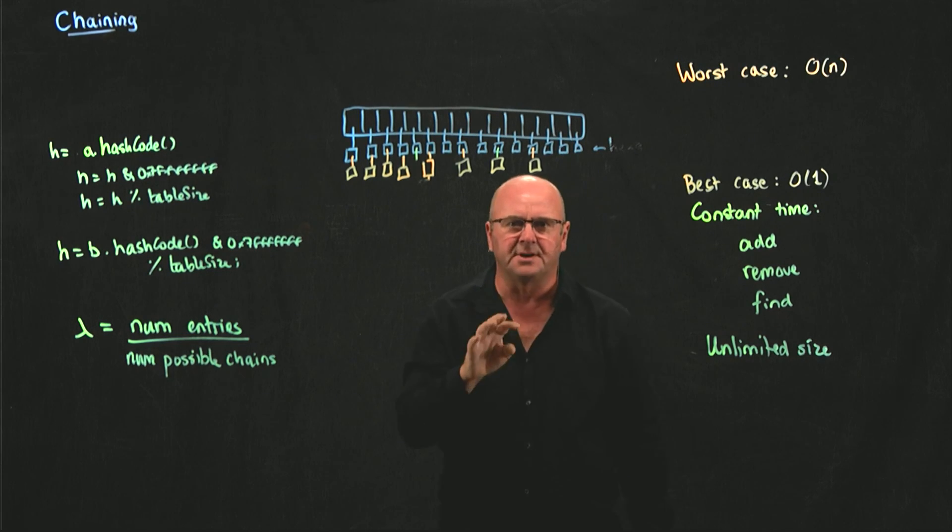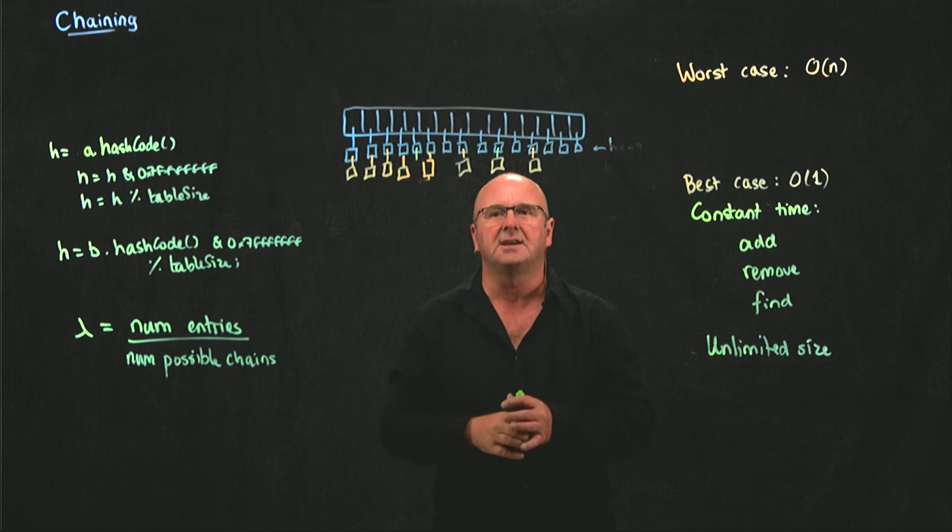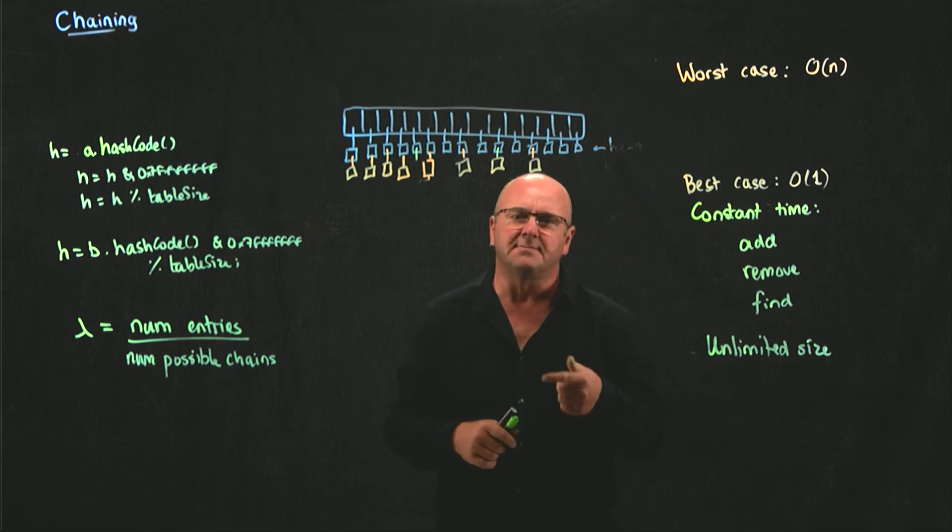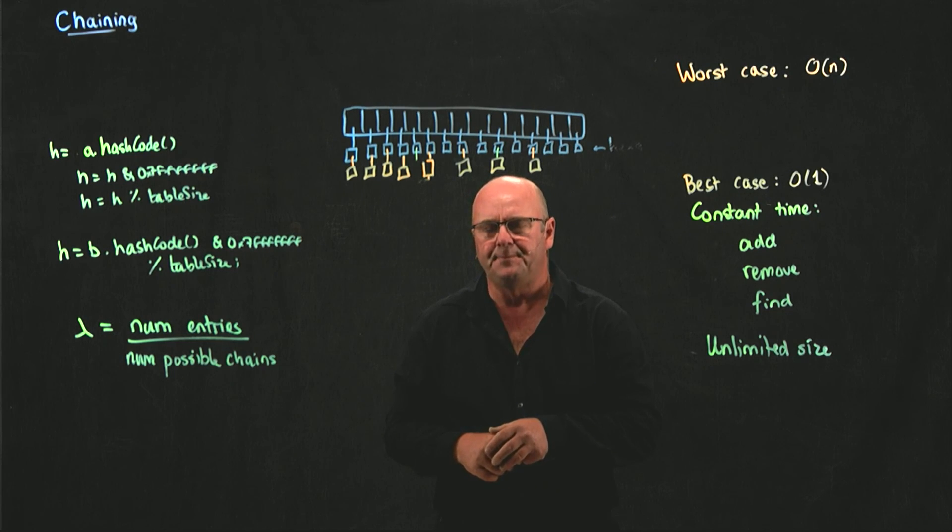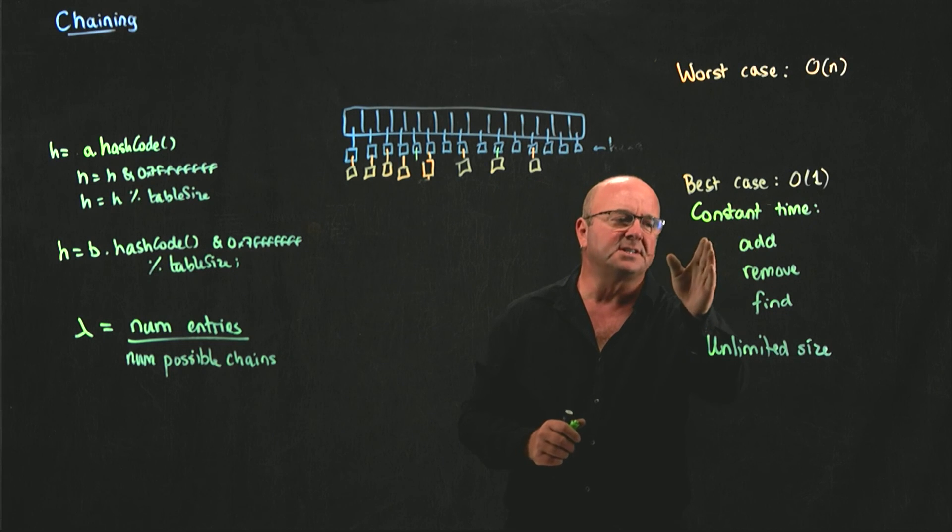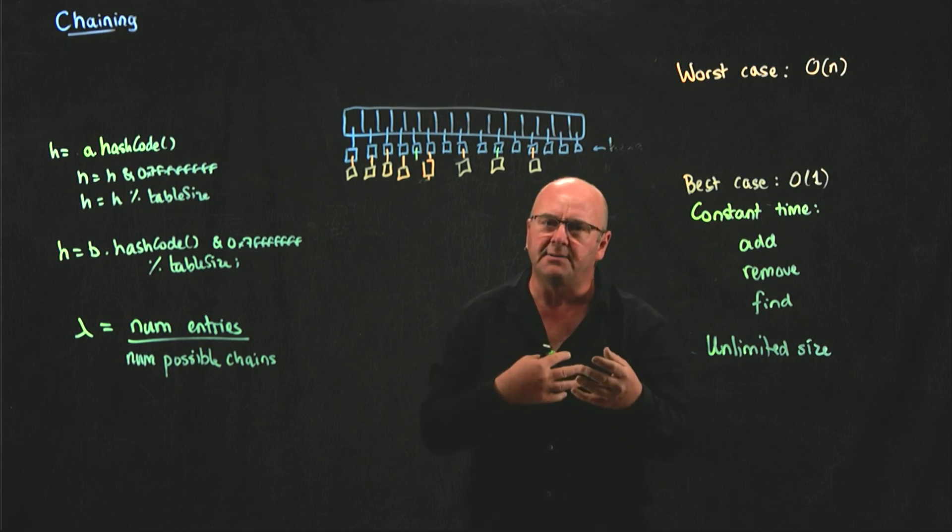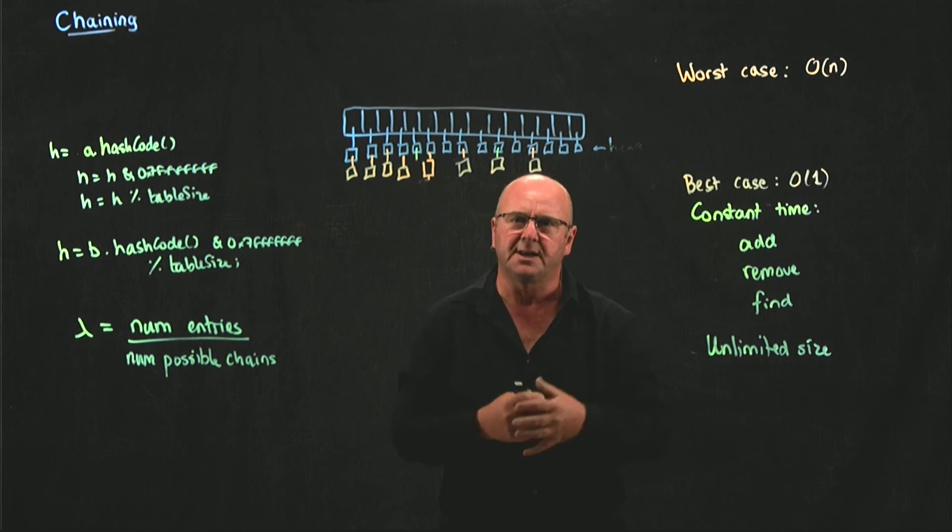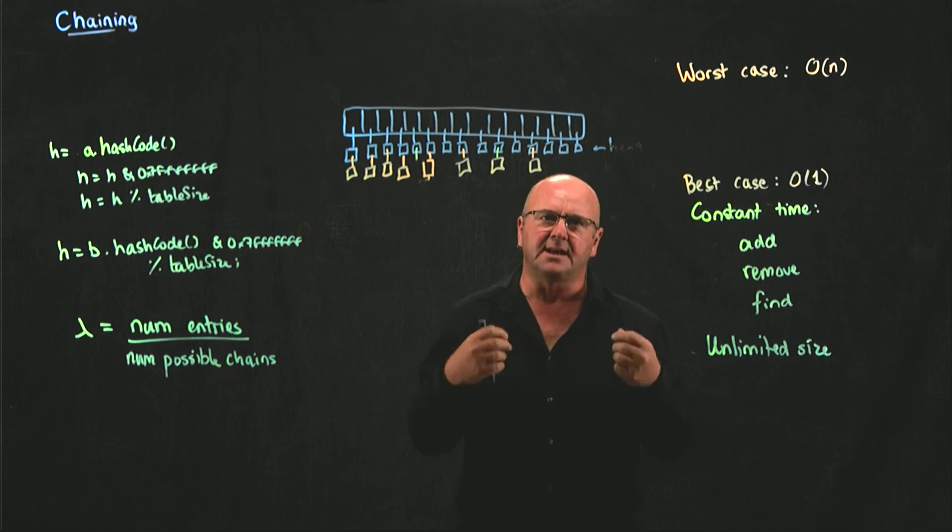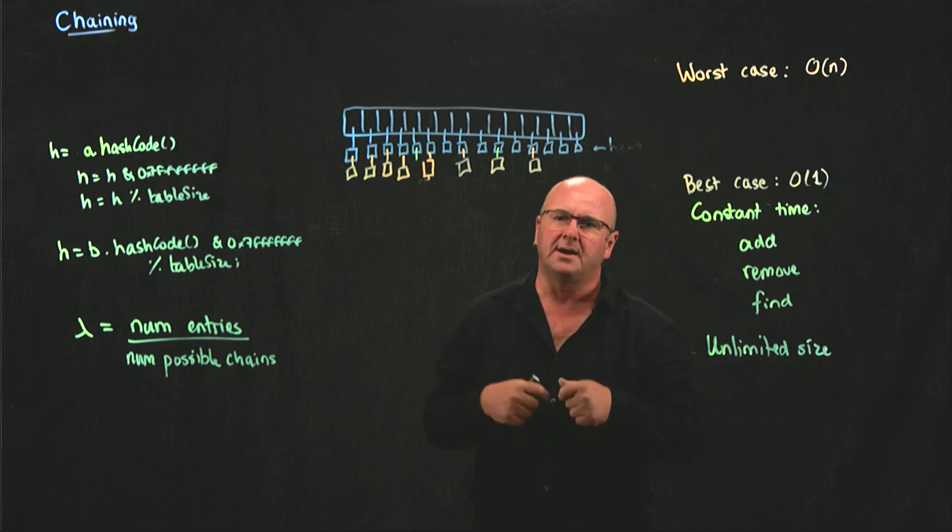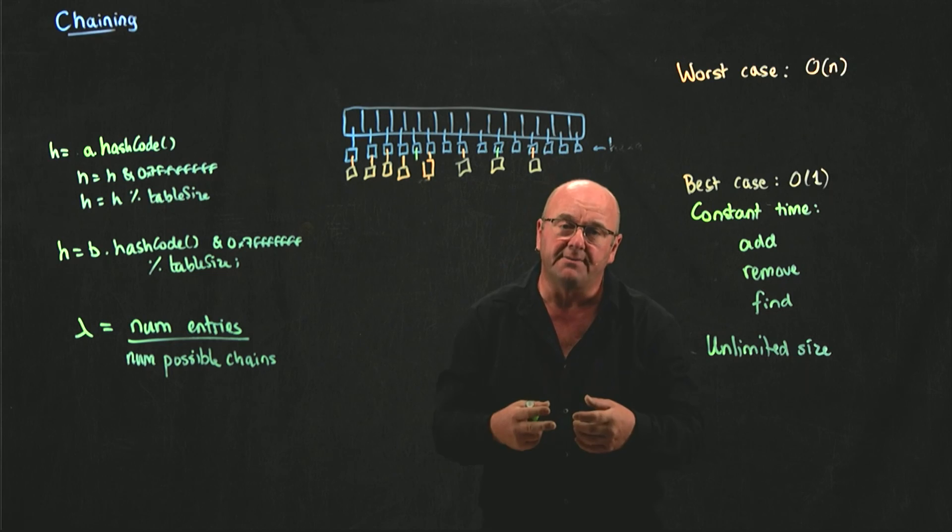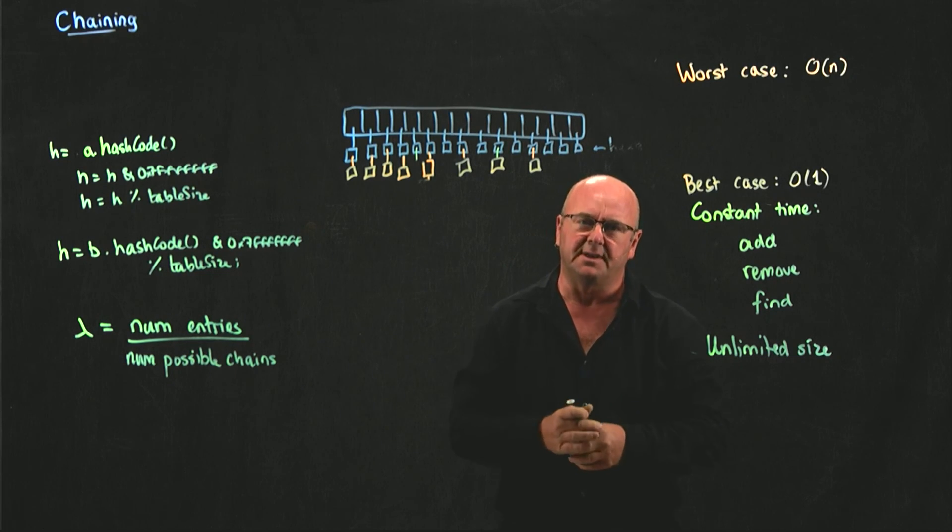Remember when we looked at different functions associated with data structures, there are things like size, is empty, is full, that are always constant time. There are functions like add, remove, and find, which depending on how we do them, they can change complexity. And then there are functions like getting the keys and getting the values, where they're big O of N functions, regardless of how we implement them.